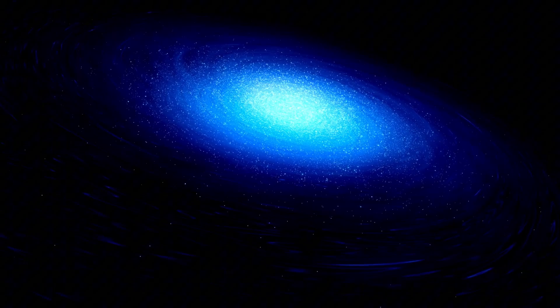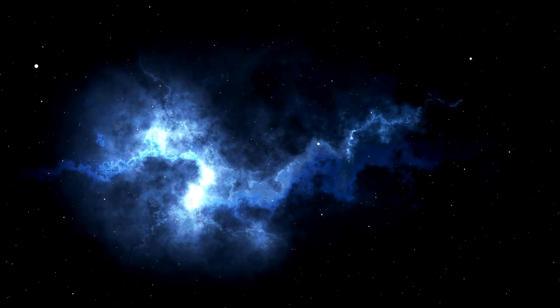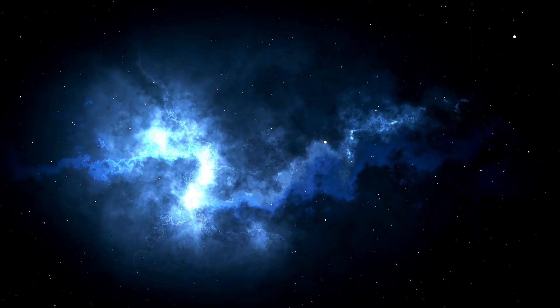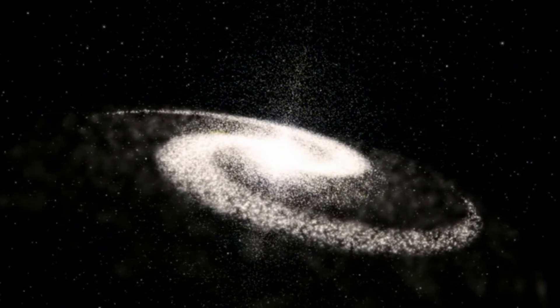A supernova of this magnitude would produce as much light as an entire galaxy, outshining everything around it. If a star like Alpha Centauri, one of our nearest stellar neighbors, were to undergo such an event, it would be impossible to miss, even if it didn't appear as bright as the Moon in our sky. The radiation emitted by the explosion would have serious consequences for Earth.